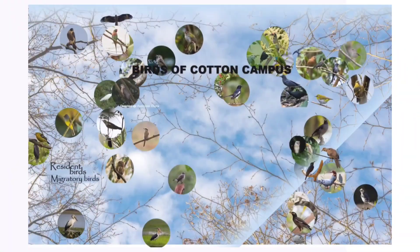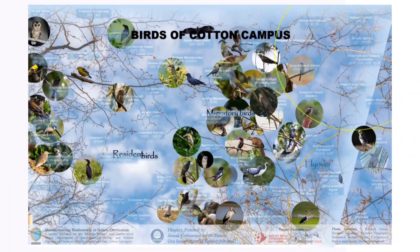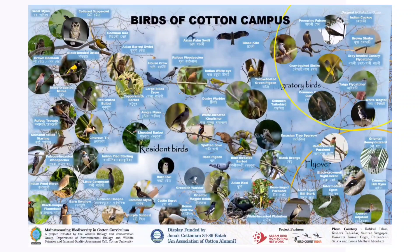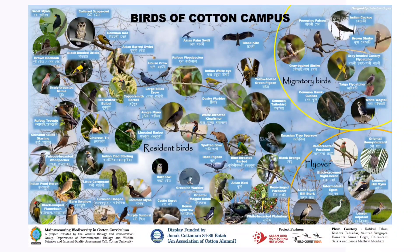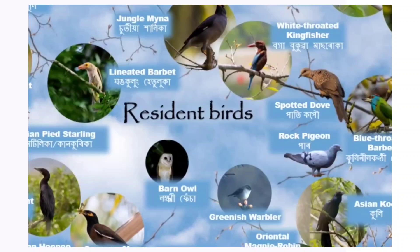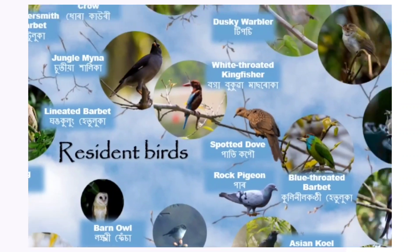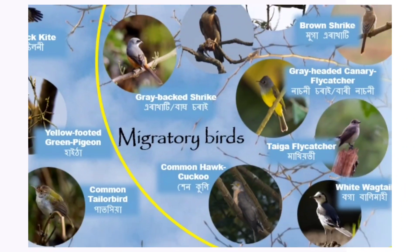So far we have collected data on bird species — both resident birds, migratory birds, and flyover birds. We now have a list of birds found in Cotton Campus: which birds were found earlier, which are no longer seen, and which birds we hadn't seen before but have now started appearing.